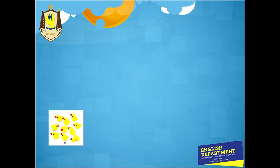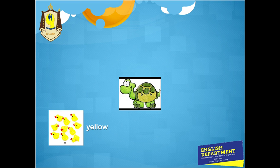Miren acá. ¿De qué color son estos pollitos? ¿Son azules? ¿Son negros? ¿Blancos? ¿Amarillos? Vamos a ver. Yes, they are yellow. Ellos son amarillos, ¿verdad? Remember: yellow - amarillo.